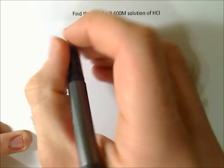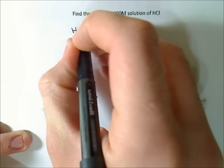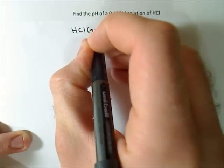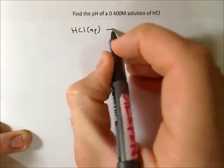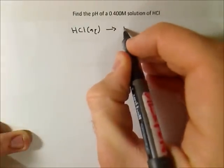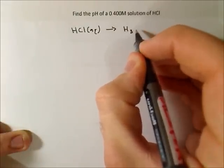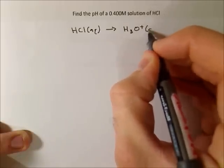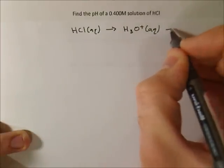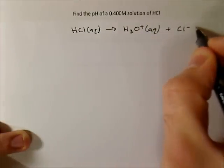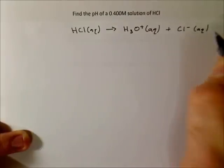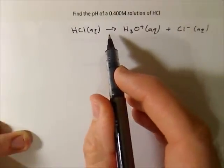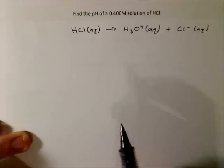So for hydrochloric acid, we write it out. Since HCl is a strong acid, we know that it completely dissociates. So that's how we do the single arrow rather than the equilibrium arrow.